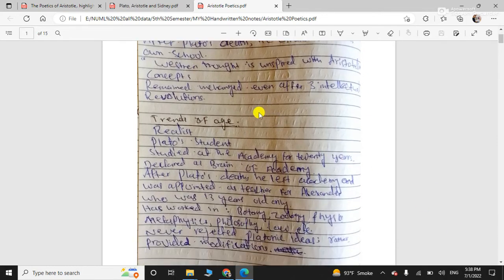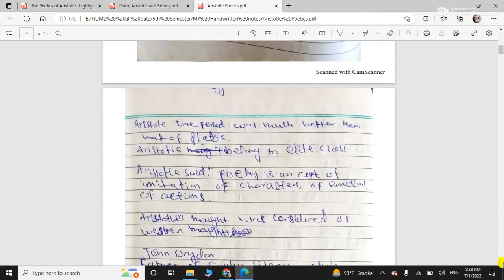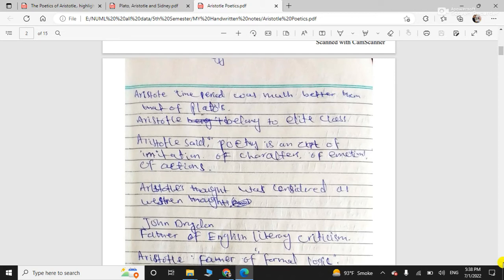Whereas, as far as the trends of the age of Aristotle are concerned, they are good and favorable as compared to Plato's age. In this age, as you know that Aristotle, he is a realist. Plato's student. So his realistic views, and after the death of Plato, he left that place, that academy, and went to Macedonia to teach Alexander the Great. So his time period was much better in terms of the politics and education.